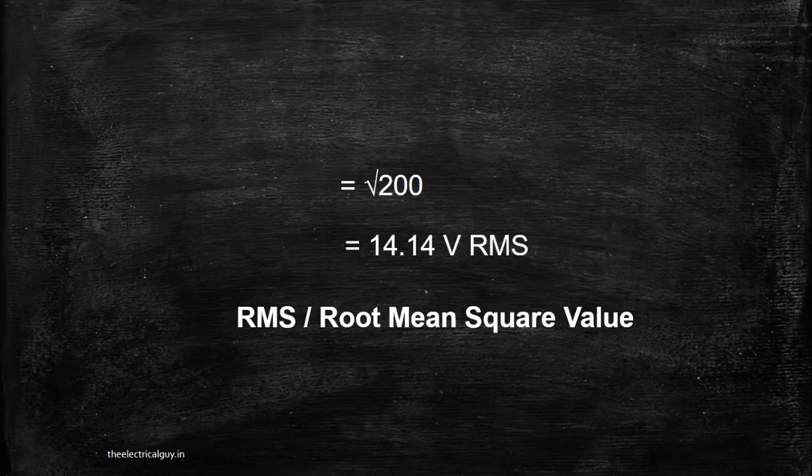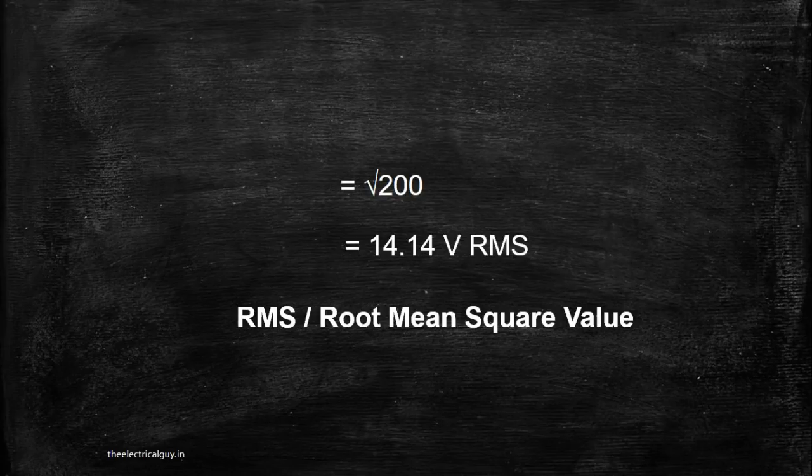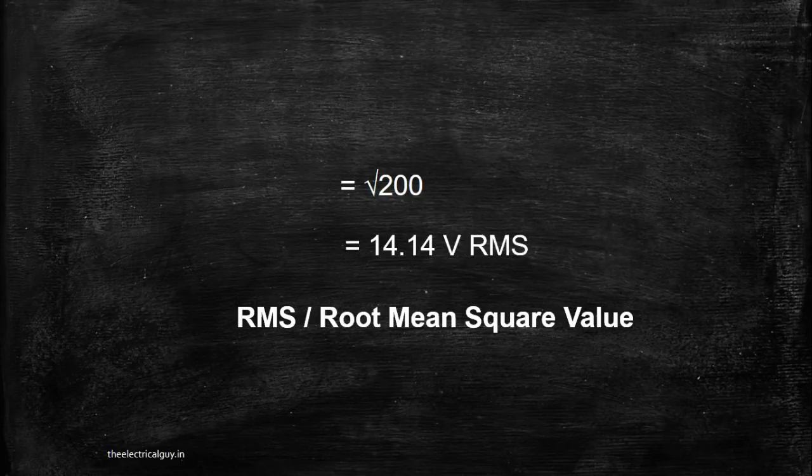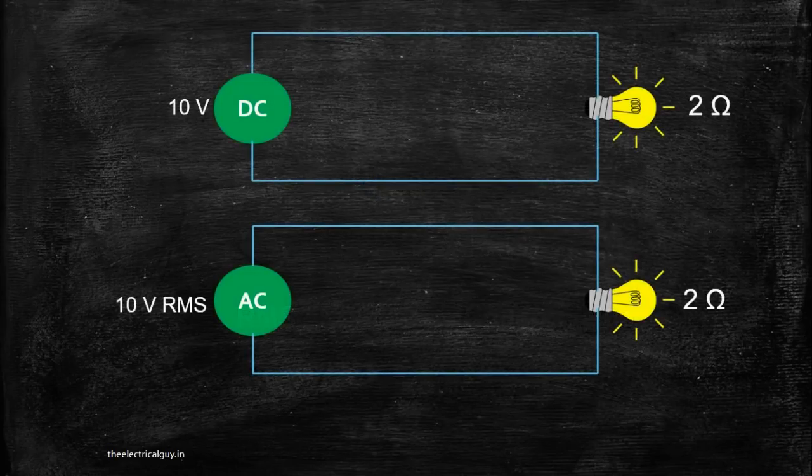This 14.14V AC is equal to 14.14V DC which means RMS value is equivalent to its DC value. To get the things more clearly, consider the example shown.